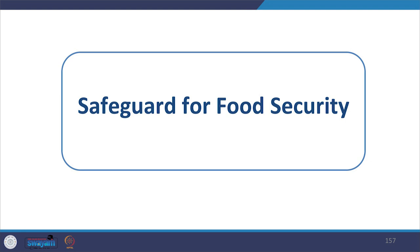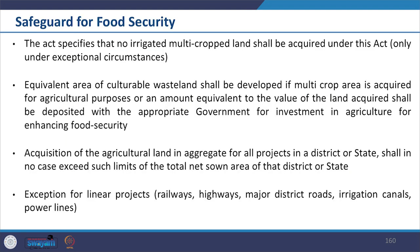One of the key features of the act is that it provides a safeguard for food security. In order to ensure this, the act specifies that no irrigated multi-cropped land shall be acquired under this act, except subject to the condition that it has been done under exceptional circumstances as a demonstrable last resort. The act also states that whenever multi-crop irrigated land is acquired, alternatives have to be given.